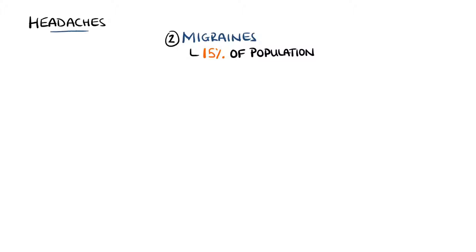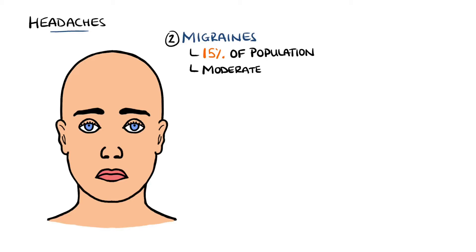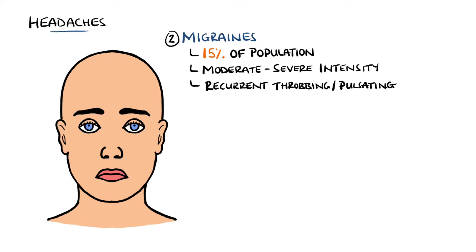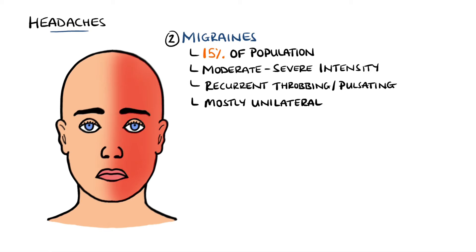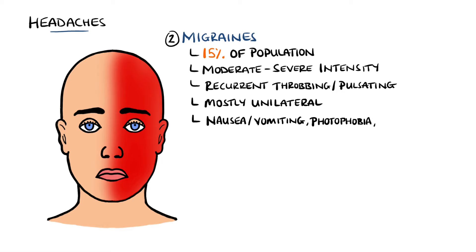Migraines are the second most common type of headache. These are described as being moderate to severe in intensity, with a recurrent throbbing or pulsating nature. In contrast to tension headaches, migraines may often be unilateral, and may also have additional symptoms such as nausea and vomiting, photophobia, and phonophobia.